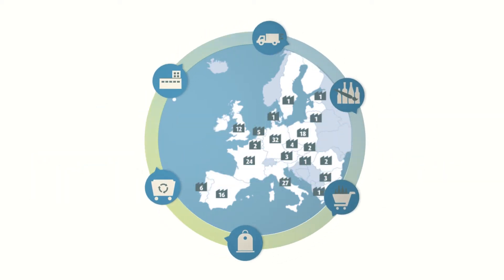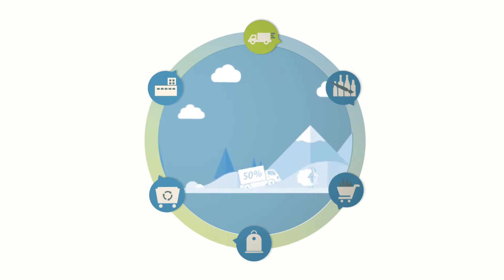It's a story of smart distribution. Over 50% of glass bottles and jars are delivered to customers within a 300 km radius.